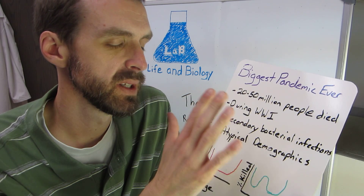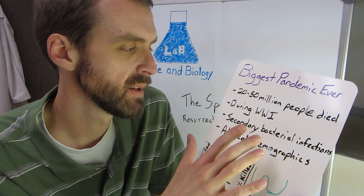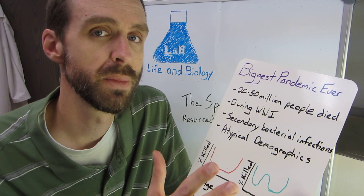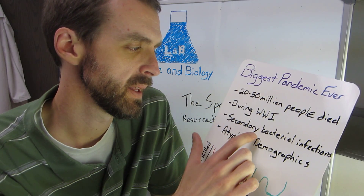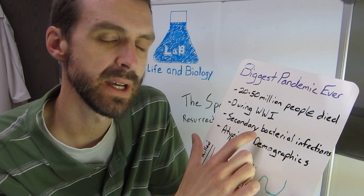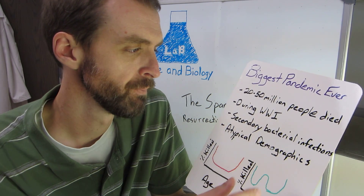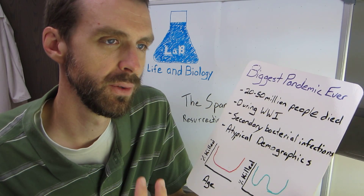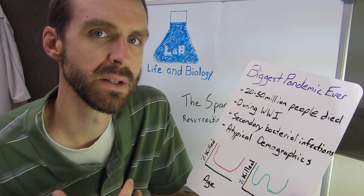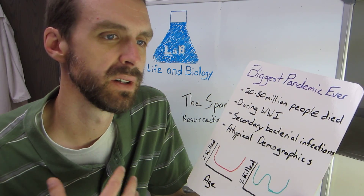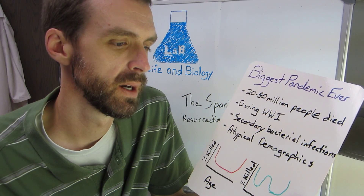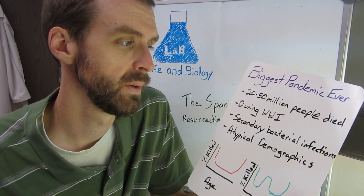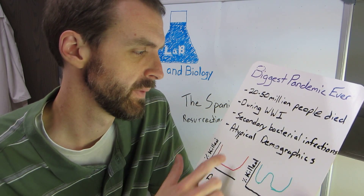With this influenza virus, the primary infection with the flu was pretty severe, but what killed a lot of people was secondary bacterial infections. You get the flu, it can cause some pathology to your lungs, and then it can give a foothold to bacterial infections later.